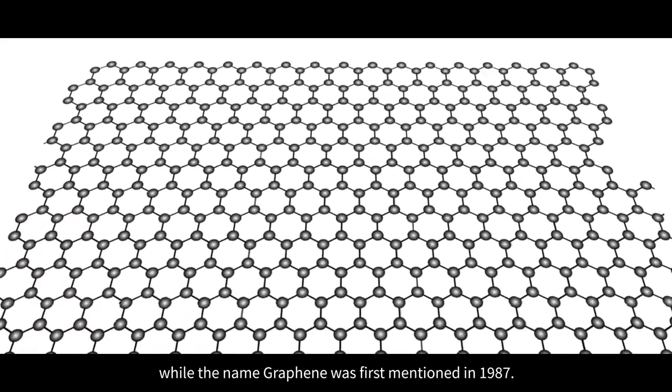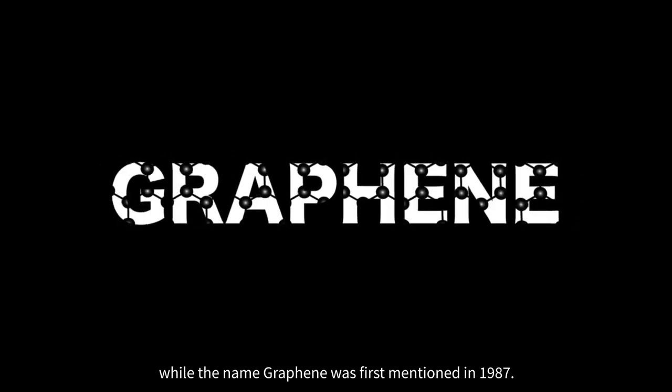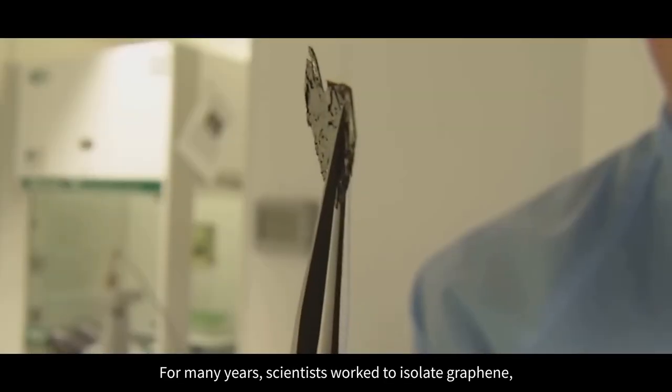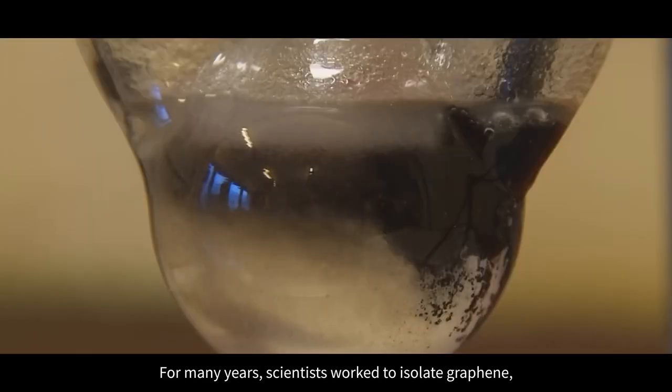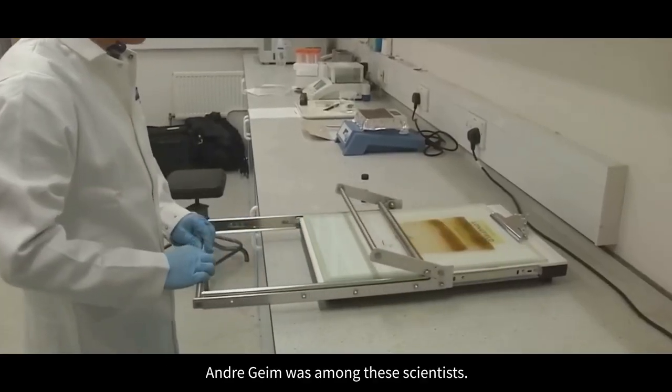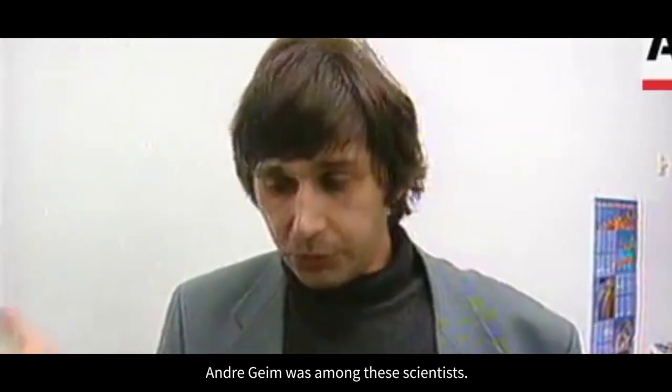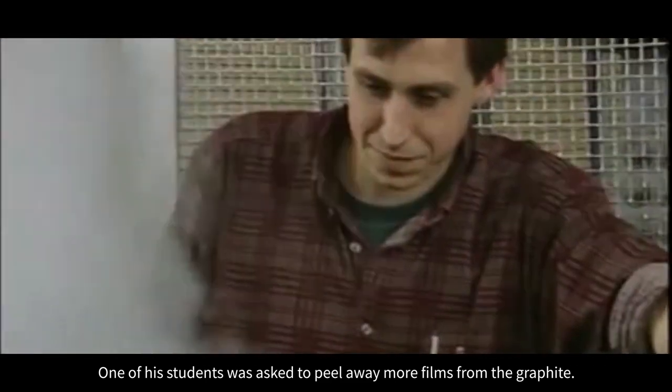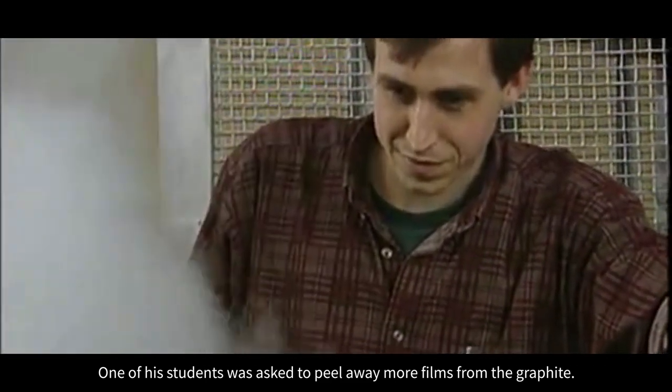While the name graphene was first mentioned in 1987, for many years scientists worked to isolate graphene but all failed. Andre Geim was among these scientists.